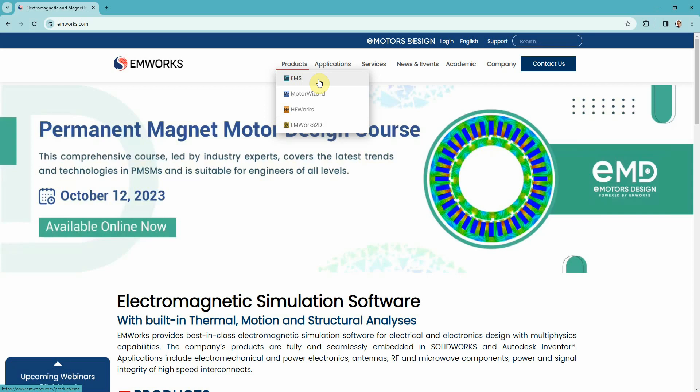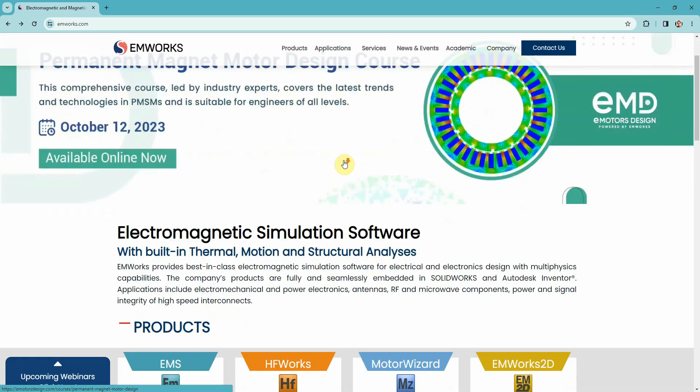EMS is for 3D simulation, Motor Wizard and EMworks2D that we talked about, and HF Works for high frequency circuits and antennas. They may have many good offers for universities, students, and industrial companies. Have a look on their website.